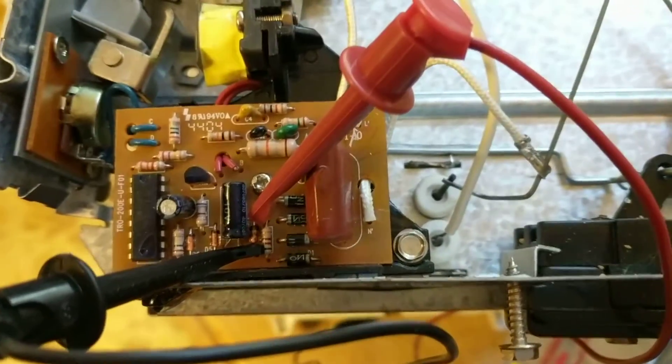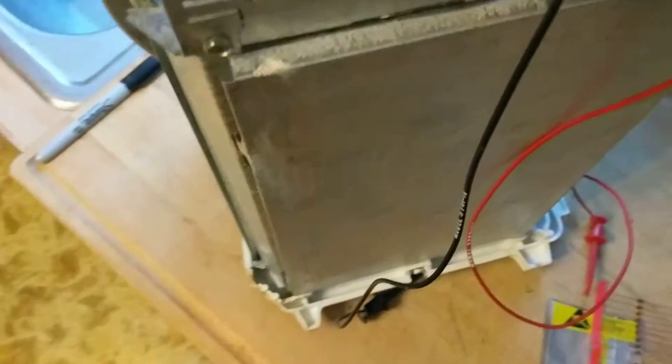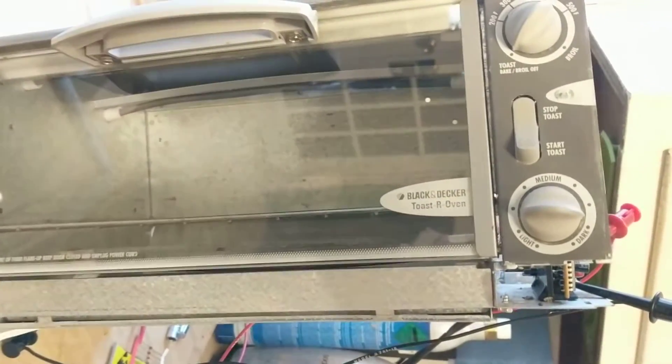This is a video regarding the repair of the Black & Decker toaster oven. This toaster oven is actually a Model 355.